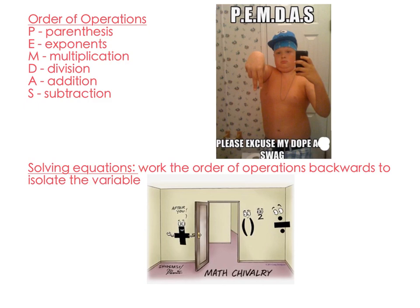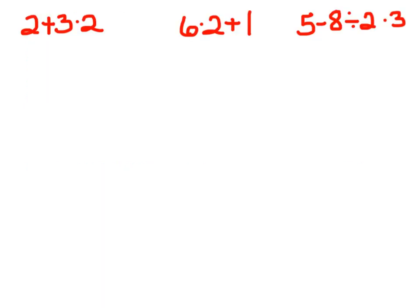Now if you're ready we will do some real math. Here are three examples - push pause and try to work these out yourself before I explain. So we've got 2 plus 3 times 2. Our order of operations says that multiplication comes before addition, so we're going to multiply that part first: 2 plus 6. Then we add, so 2 plus 6 is 8.